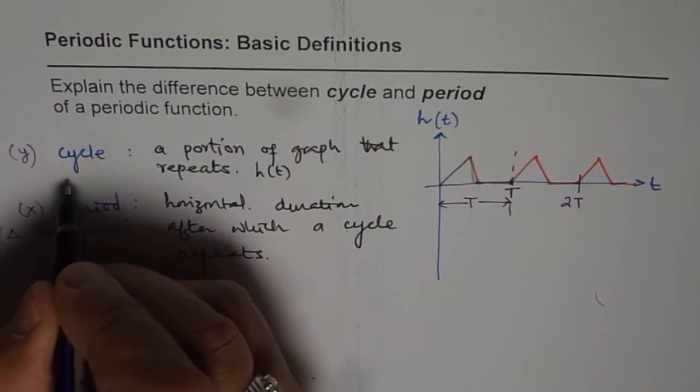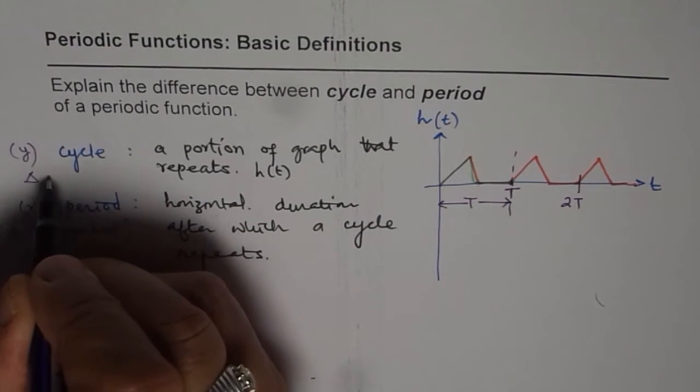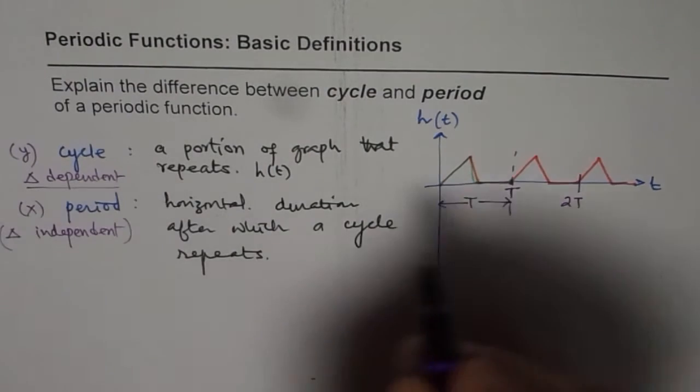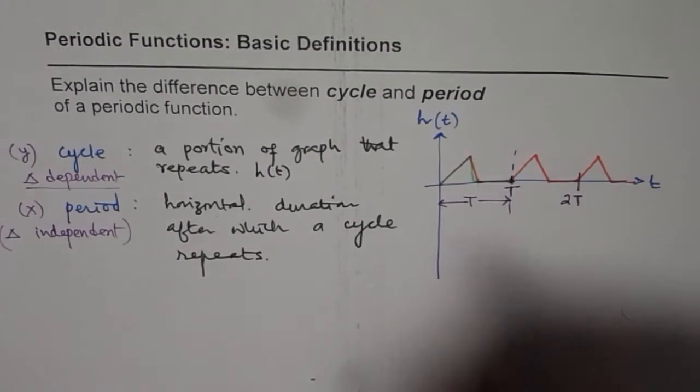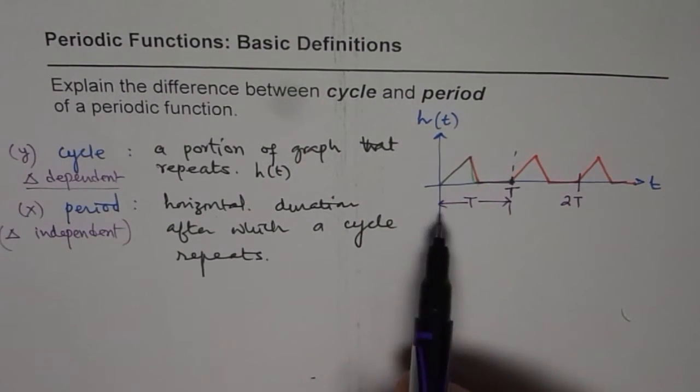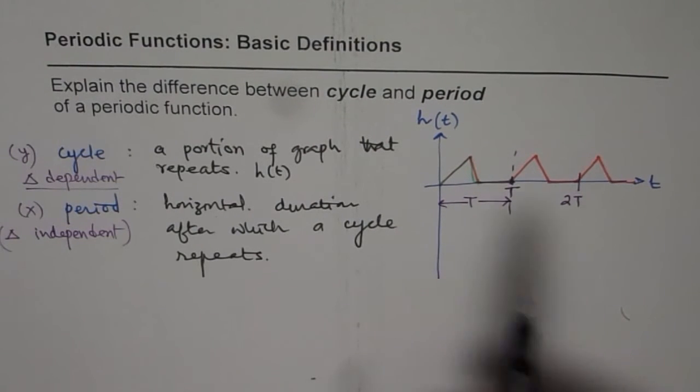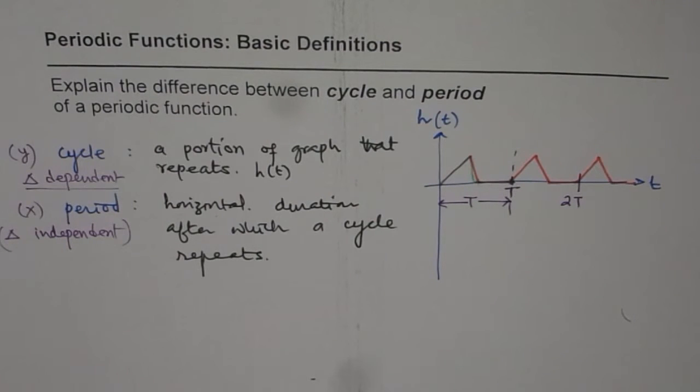And cycle is actually the change in dependent variable as a whole. The whole thing is one cycle, and time taken for that whole thing is one time period. That is how they are related. I think it's very important to understand this as we move forward in understanding periodic functions. I hope that helps. Thank you and all the best.